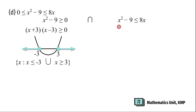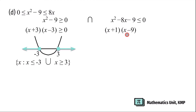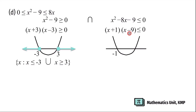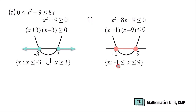Now let us do the second part: x² - 9 ≤ 8x. Bring 8x to the left-hand side so that 0 is on the right-hand side. Factorizing gives (x + 1)(x - 9) ≤ 0. Draw a smile graph. For x + 1, the x-intercept is -1. For x - 9, the x-intercept is +9. Since y is less than or equals to 0, the solution will be in the middle, written as x such that x ≥ -1 and x ≤ 9.